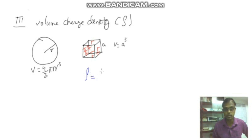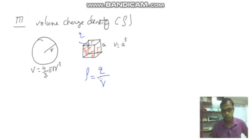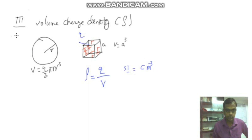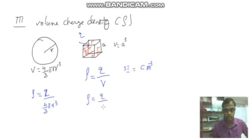Volume charge density rho is equal to total charge Q divided by total volume V. Its SI unit is Coulomb per meter cube. If the shape is spherical, rho equals total charge divided by 4/3 pi R cubed. For a cube, we can write the volume charge density as Q divided by A cubed.